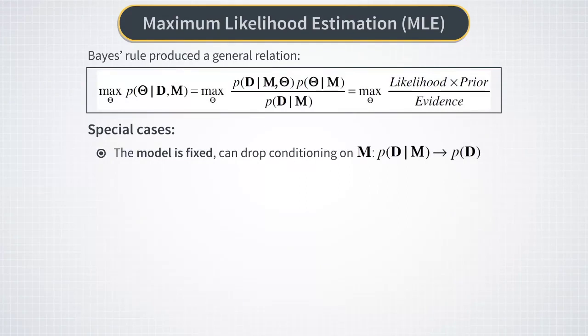The first special case arises when the model is fixed once and for all. In this case we can drop the conditioning on M in this formula. The Bayesian evidence in this case is simply some function of data only and usually turns out to be relevant for the analysis of most probable values of data.